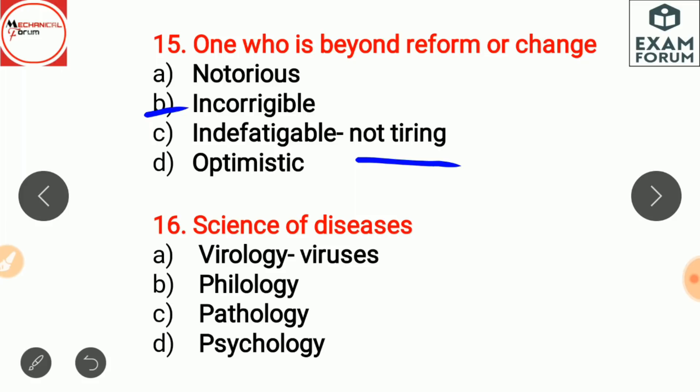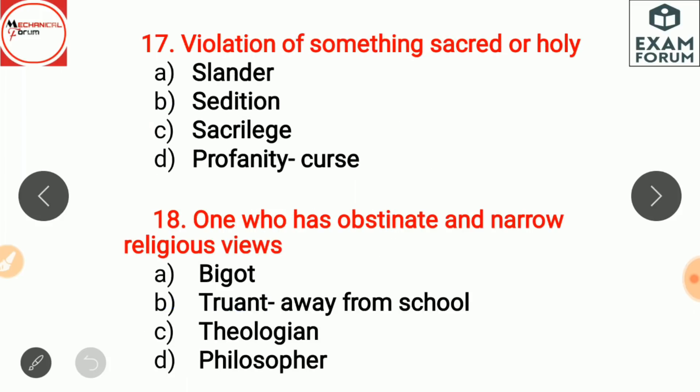The science of disease is pathology. Virology is the study of viruses. Philology is the study and historical development of language. Psychology is the science of behavior, mind, feelings, and thoughts of a person.